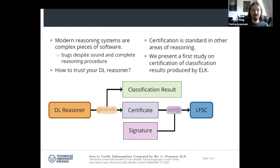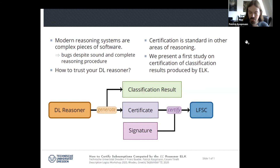What is done in other areas of automated reasoning to obtain certainty is certification. The reasoner, in addition to providing a classification result — for example, if we're interested in ontology classification — would also generate a certificate that allows an independent tool to check whether the classification result is correct.